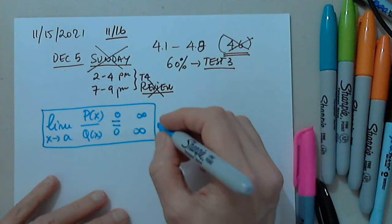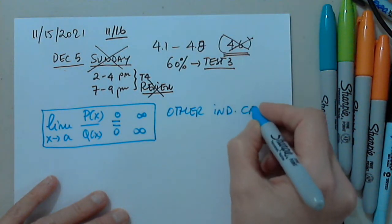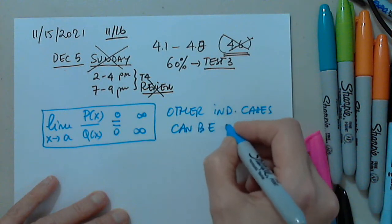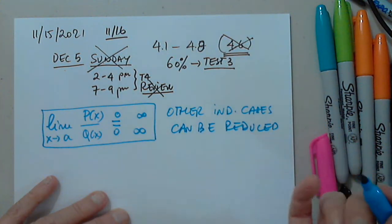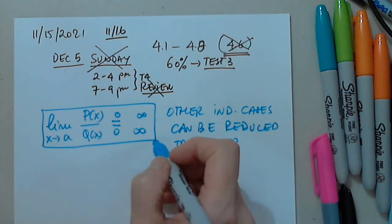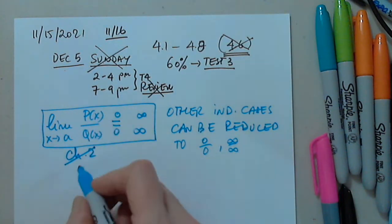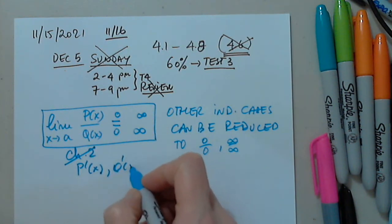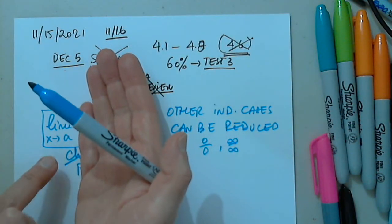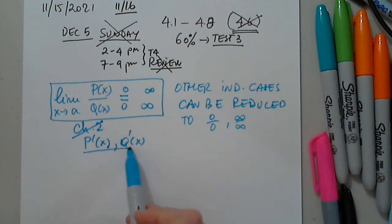In this section we use L'Hôpital's rule. If you remember, even other indeterminate cases can be reduced to the two standard forms — 0 over 0 and infinity over infinity. The reason we did not discuss it in chapter two is we did not know how to find p prime of x or q prime of x back then. But if we know how to differentiate, we can discuss limits using L'Hôpital's rule even from chapter two.